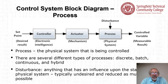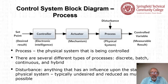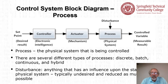The process — the last block in this diagram — is the physical system being controlled. There are several different types of processes: discrete, batch, continuous, and hybrid. Disturbance is anything that has influence upon the state of the physical system. This is typically undesired and reduced as much as possible — you don't want anything disturbing the process. However, since it's the real world, things can disturb the process.